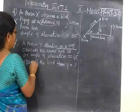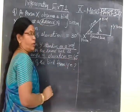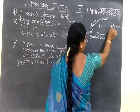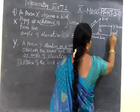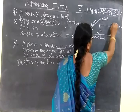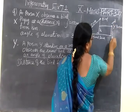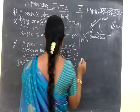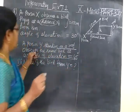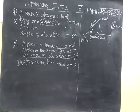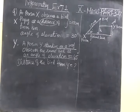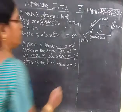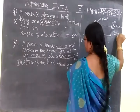Person Y observes the same bird at an angle of elevation of 45 degrees. The roof here refers to person Y's position. This refers to the roof, meaning the height of the roof. The height of the roof is given as 20 meters.